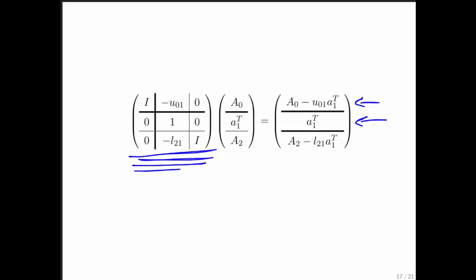Notice that it updates it with a rank 1 update. It updates all of the rows below with a rank 1 update. If we then choose these vectors correctly, then we can selectively introduce 0s in our matrix.